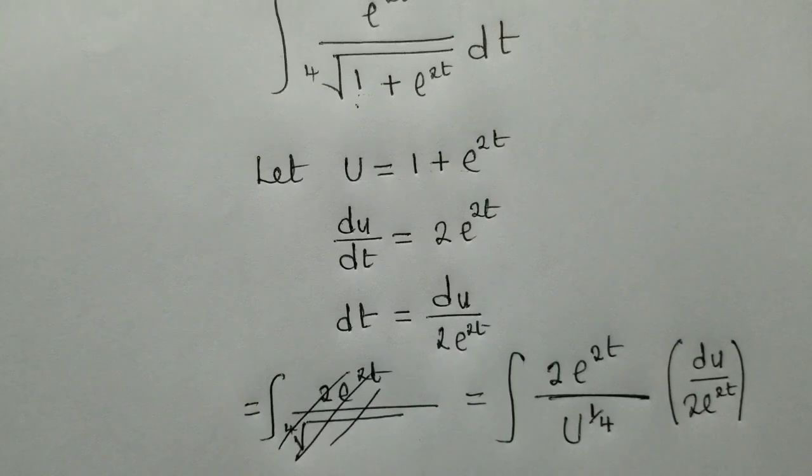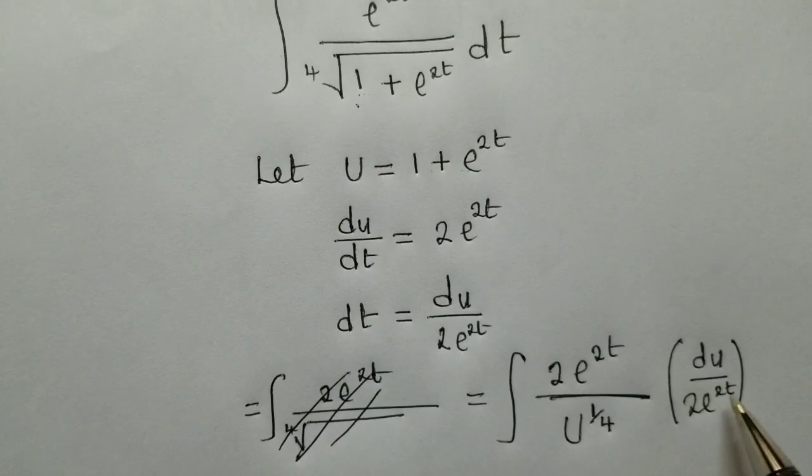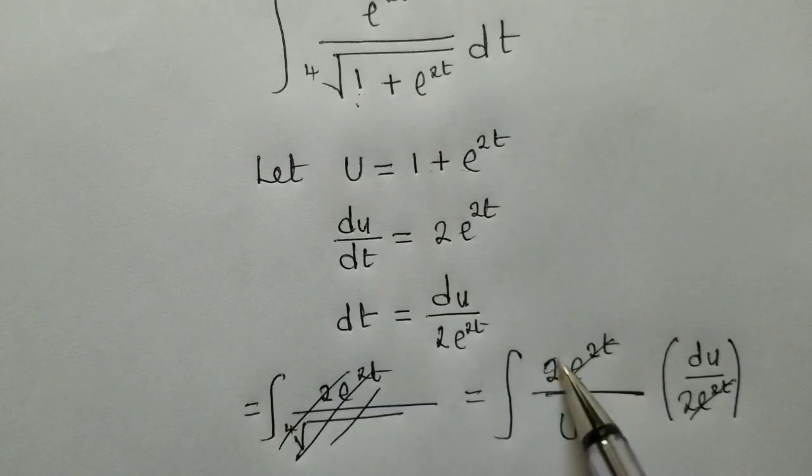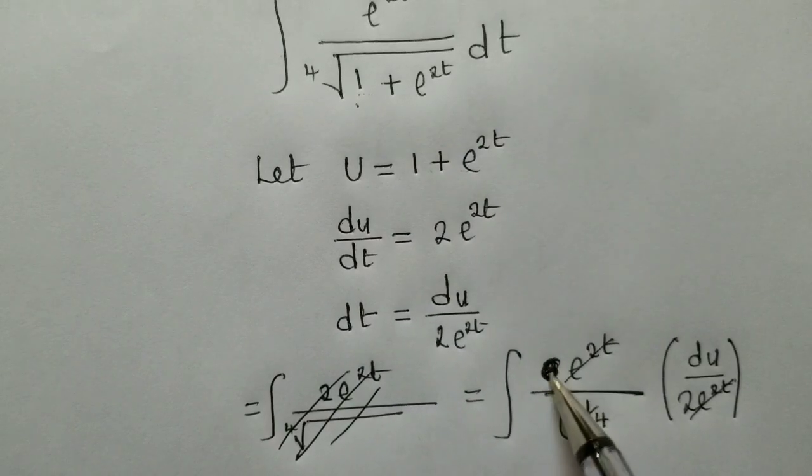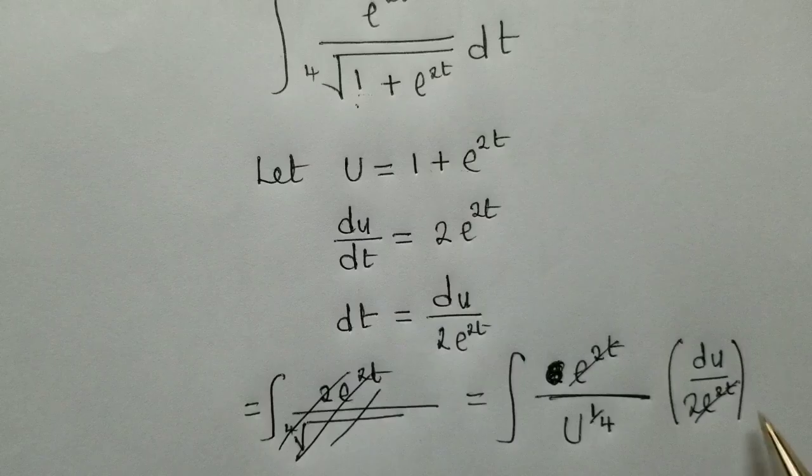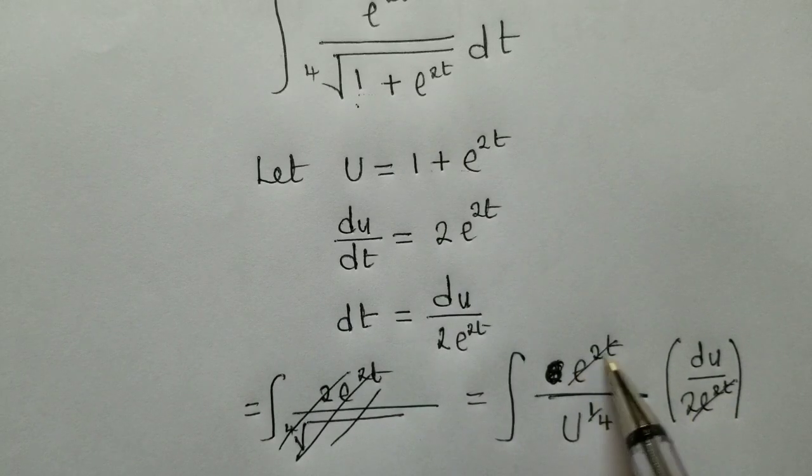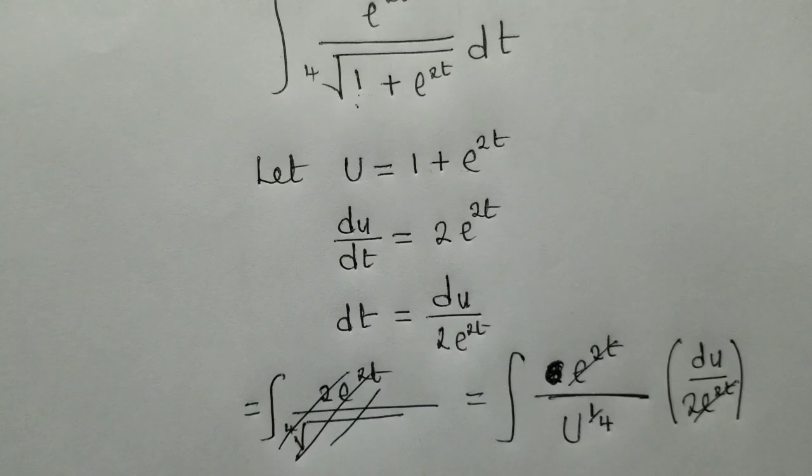So now we work out things. So if you can see, this and this will cancel. Actually, this two is not supposed to be there. We'll cancel. So e power 2t and e power 2t will cancel. We shall remain with them.